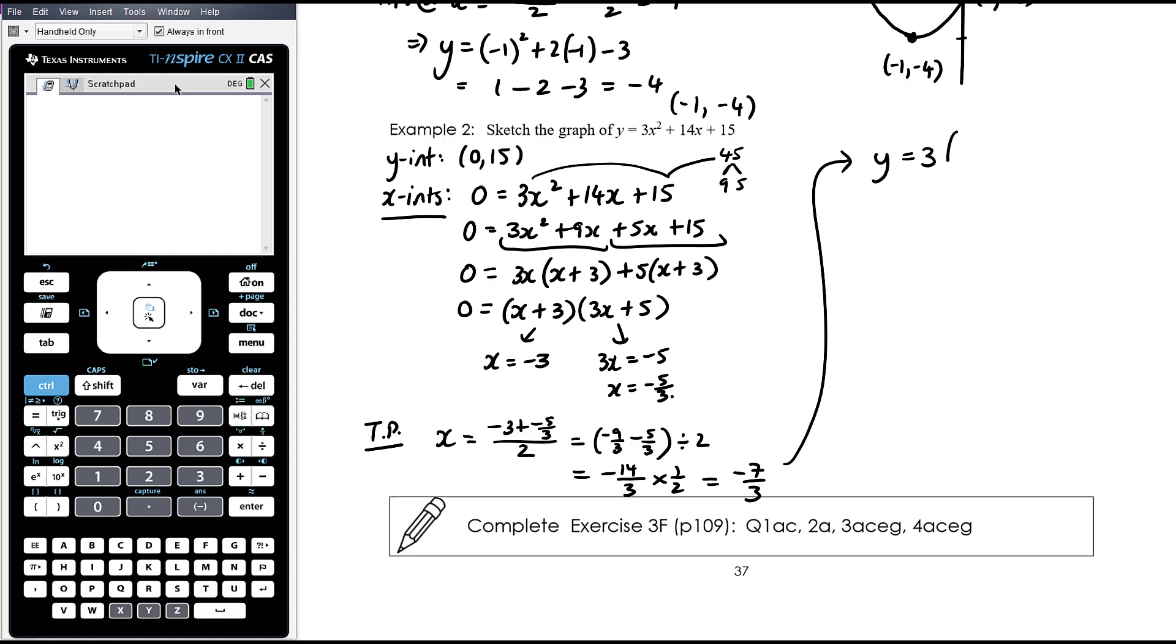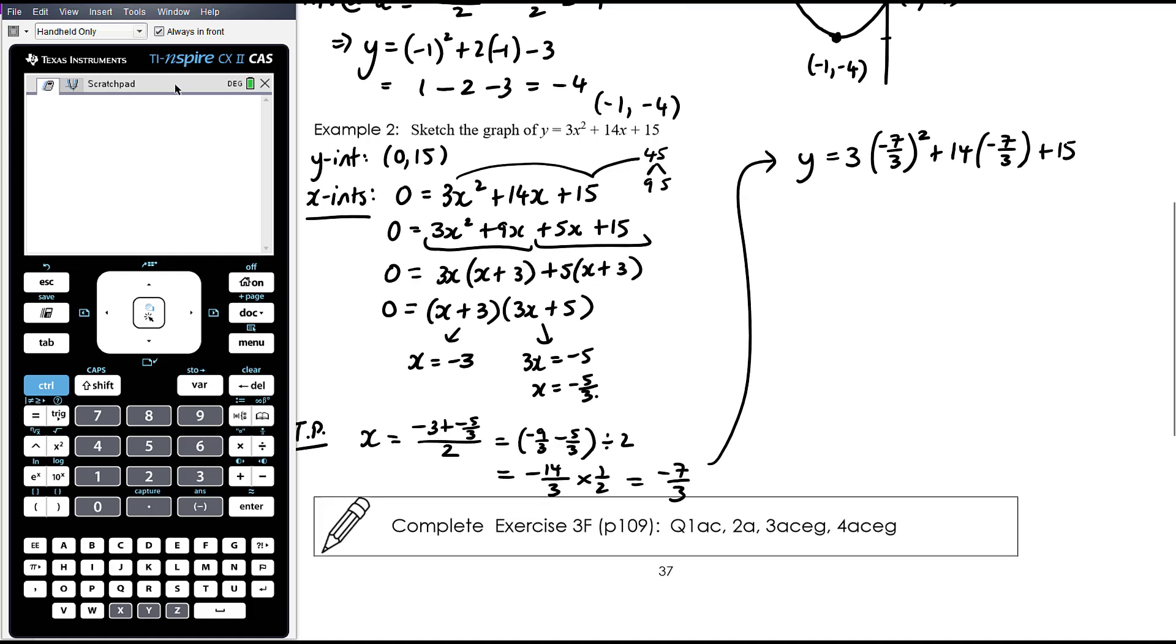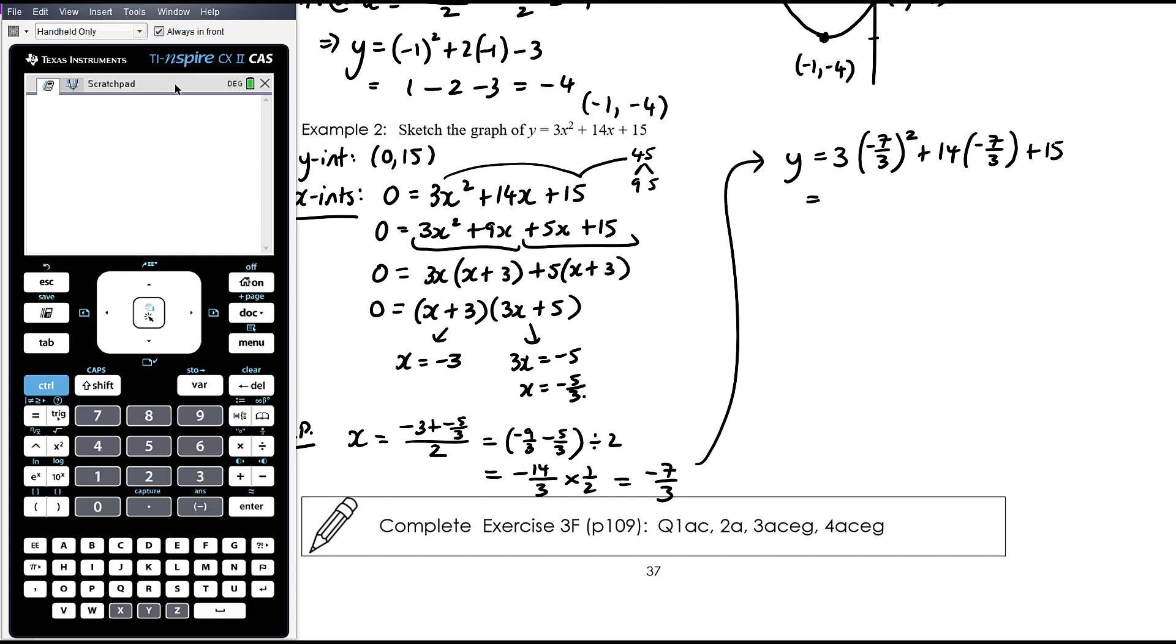Y equals, so we're going to sub into the original equation, x is negative 7 thirds squared plus 14 times negative 7 thirds plus 15. So I know these numbers aren't very fun, but it's absolutely within the realm of the kind of number work you need to be able to do at this level of maths. So that's 3 times negative 7 thirds squared will be 49 on 9 plus, sorry, it's not plus, it's minus, 14 times 7, 10 sevens are 70, 4 sevens are 28, so that's 98, 98 on 3 plus 15. That 3 is going to cancel with that 9, and so that's nice because we can just go with the common denominator of 3, 49 on 3 minus 98 on 3, and 15 is the same as 45 on 3. 49 minus 98 is negative 49 on 3 plus 45 on 3, and so that's negative 4 on 3.